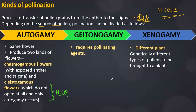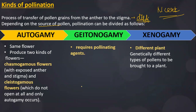Geitonogamy means the transfer of pollen grain from the anther to the stigma of another flower of the same plant — a pollinating agent is required. Xenogamy involves transfer between genetically different flowers of different plants. For example, hibiscus pollen grain falling onto jasmine — genetically different pollen is brought to a flower, which can result in offspring with different characteristics.